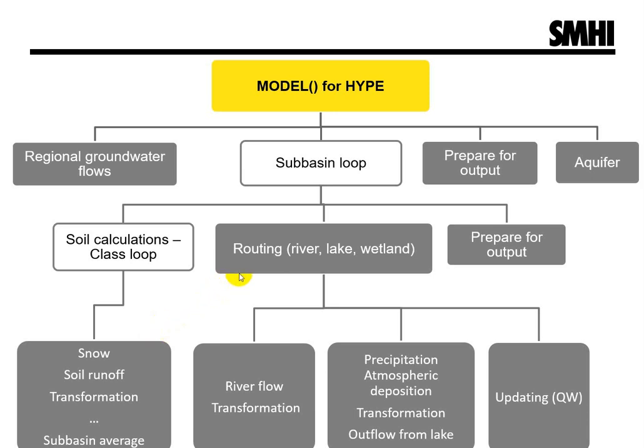Next are the surface water calculations. The local flows and processes in internal wetlands, local streams, and internal lakes are calculated first. Then the processes in the regional network — main river and outlet lakes and wetlands. River inflow processes and outflow are calculated. For the main river, interaction with floodplains is also considered. Lake inflow processes and outflow of internal lakes are calculated.